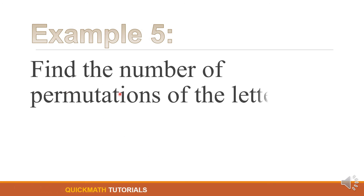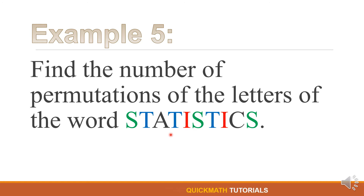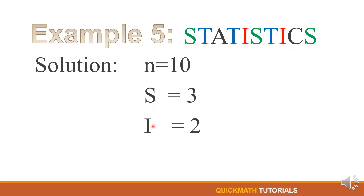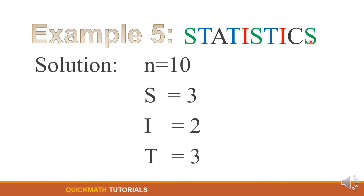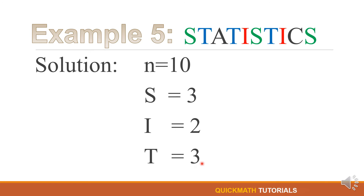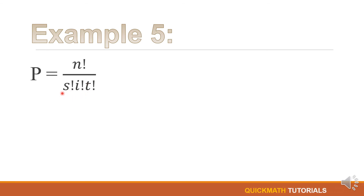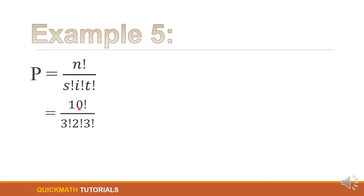For example, find the number of permutations of the letters of the word STATISTICS. For our solution, n is equal to 10 since there are 10 letters in the word STATISTICS. The repeating letters are S, I, and T. S appears 3 times, I appears 2 times, and T appears 3 times. Using the formula, P equals n factorial divided by S factorial times I factorial times T factorial.